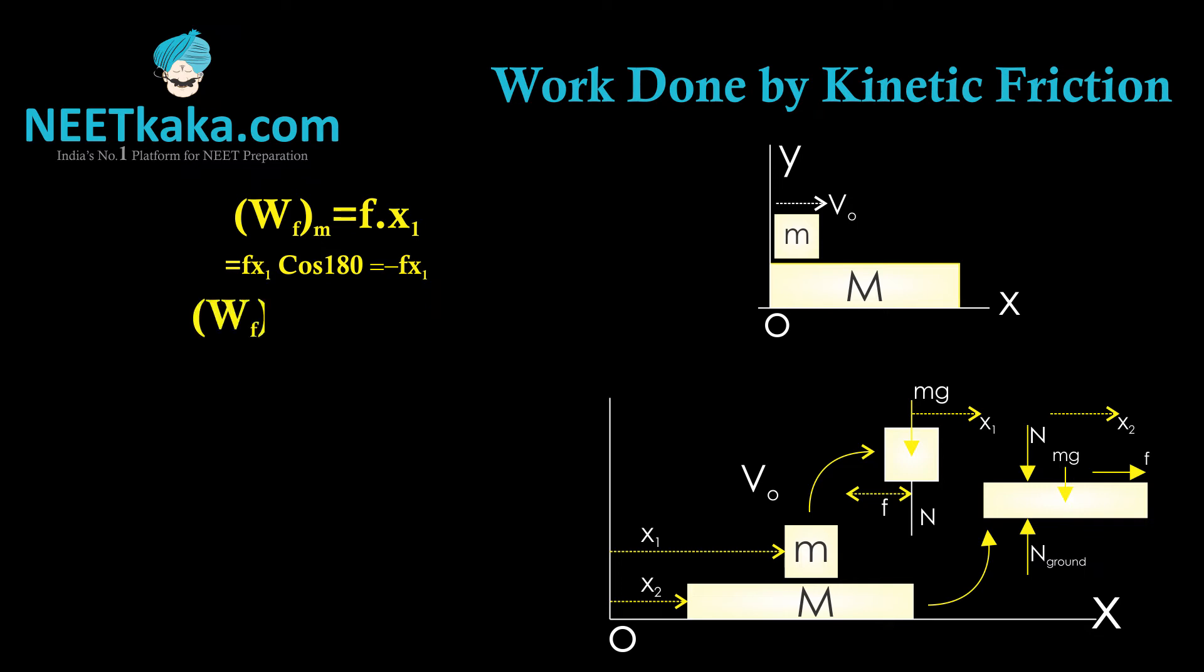The work done by friction on the lower block is F x₂ because F and x₂ are in the same direction. Therefore, the total work done on the system is WF on m plus WF on M, which is minus F x₁ plus F x₂. So it is minus F times (x₁ minus x₂).